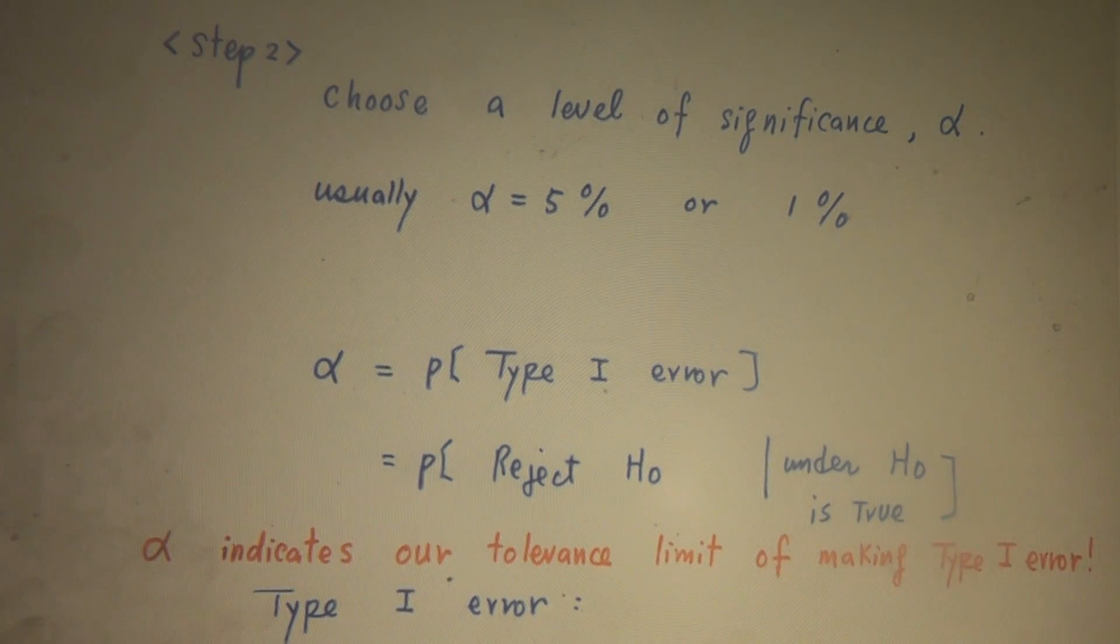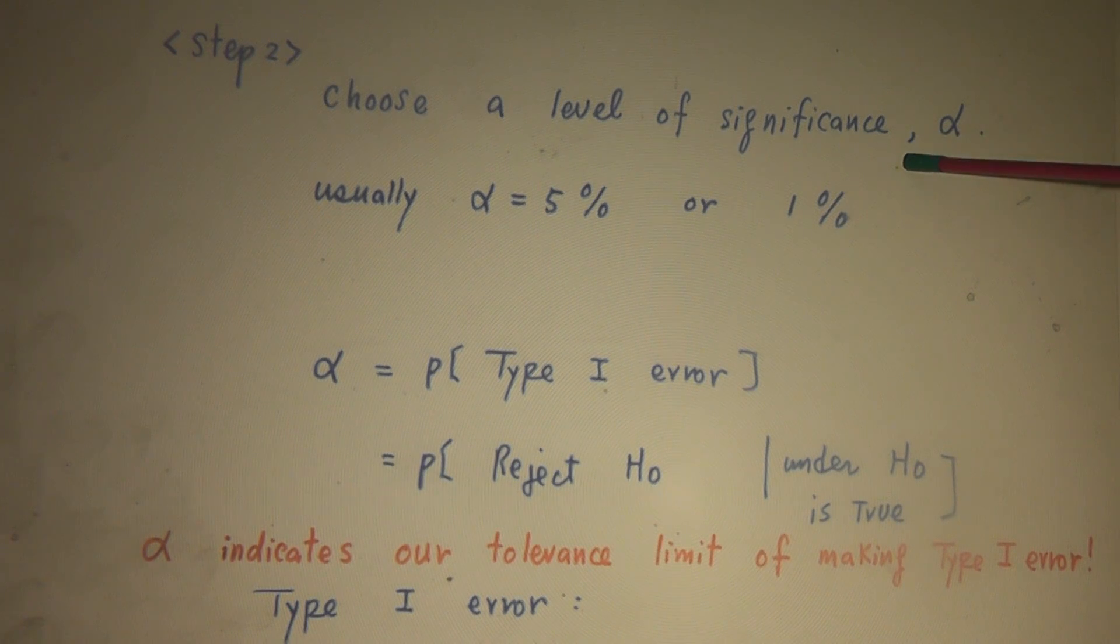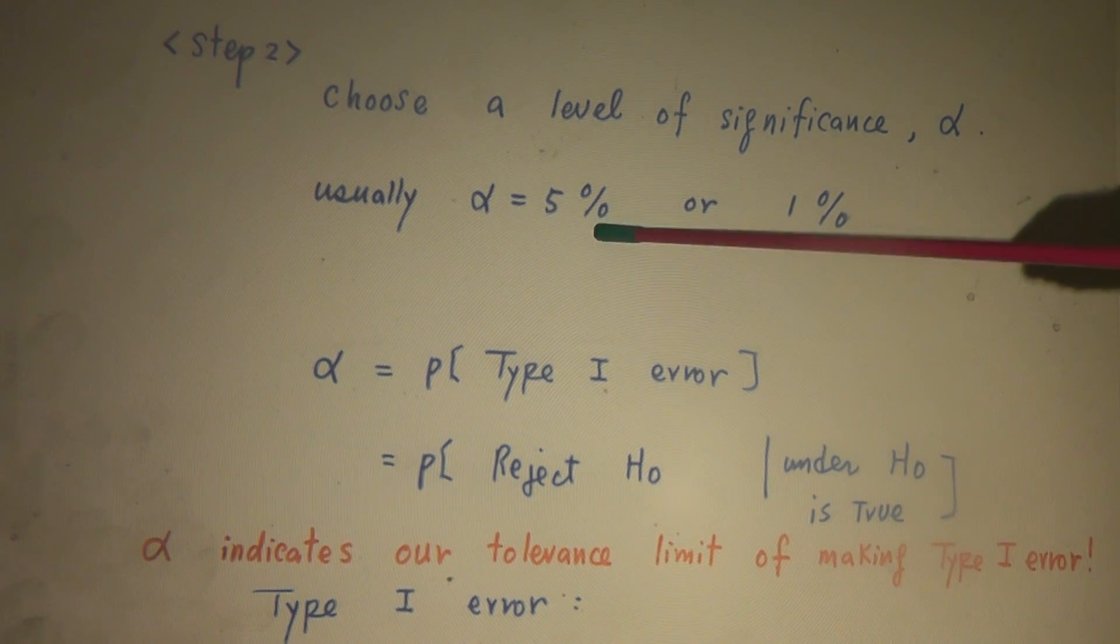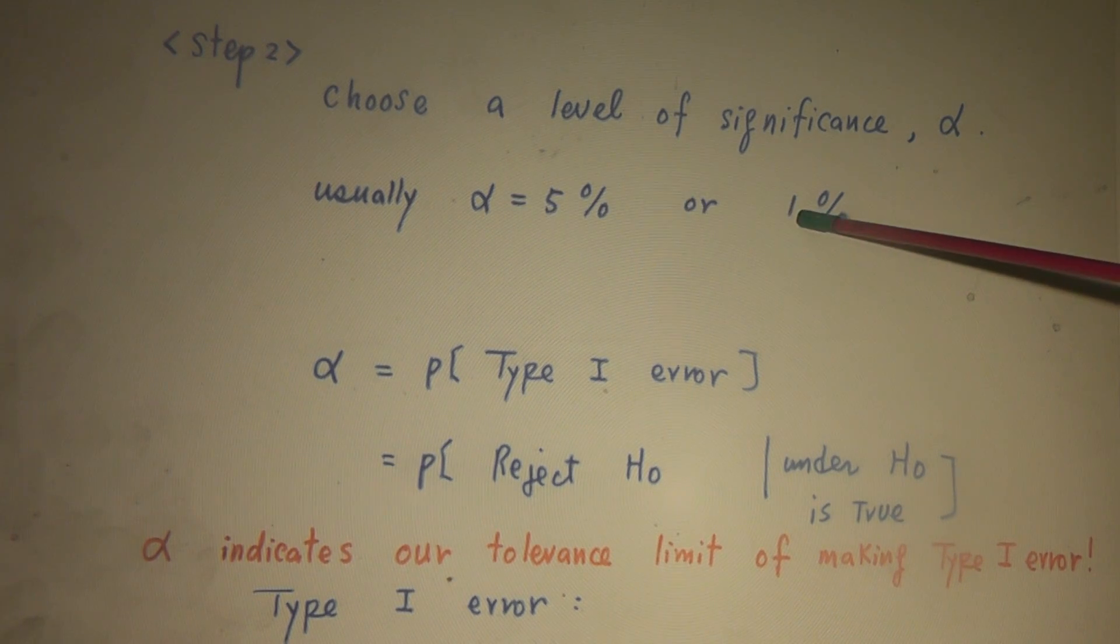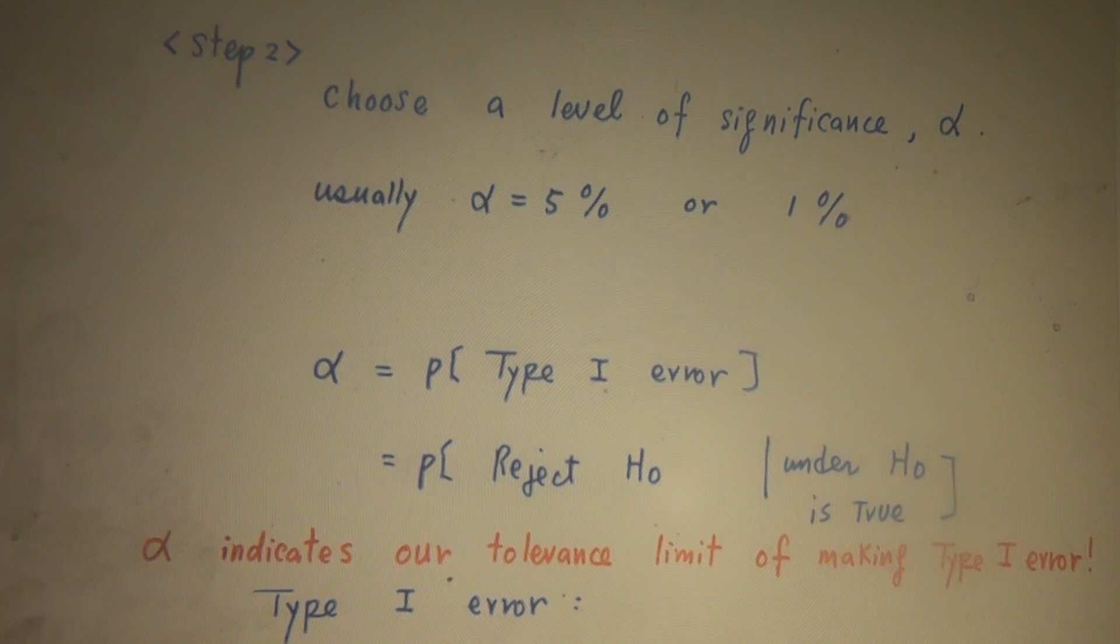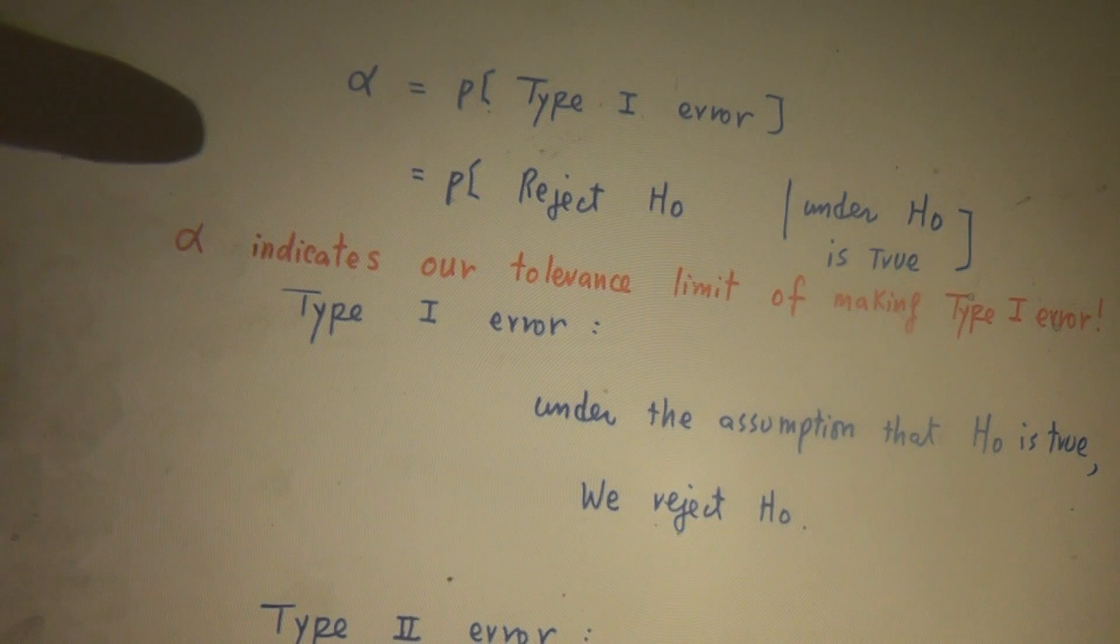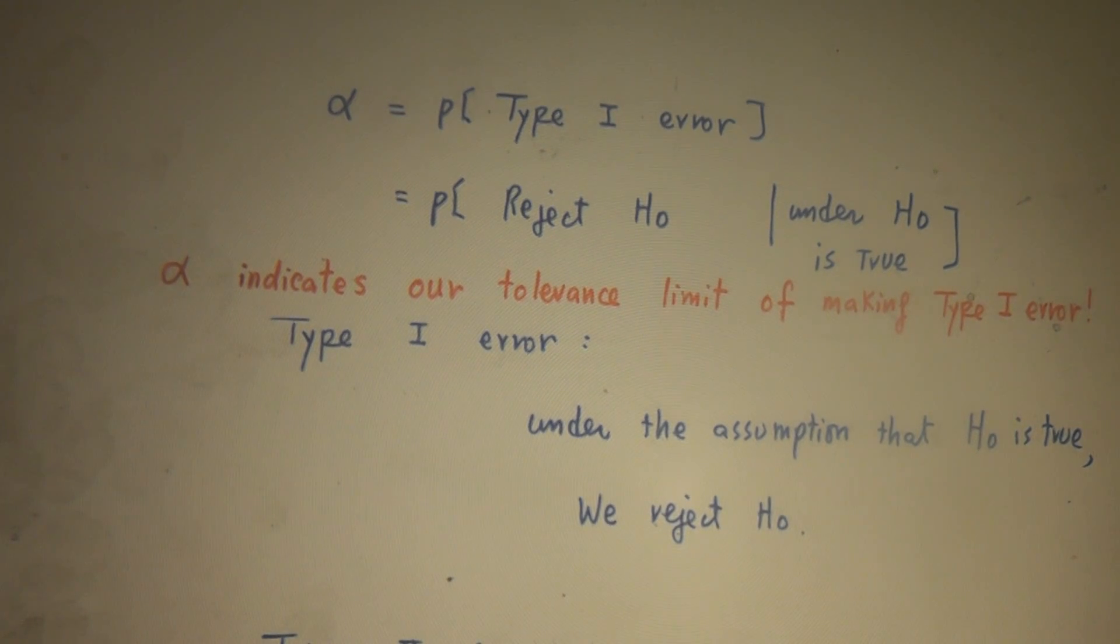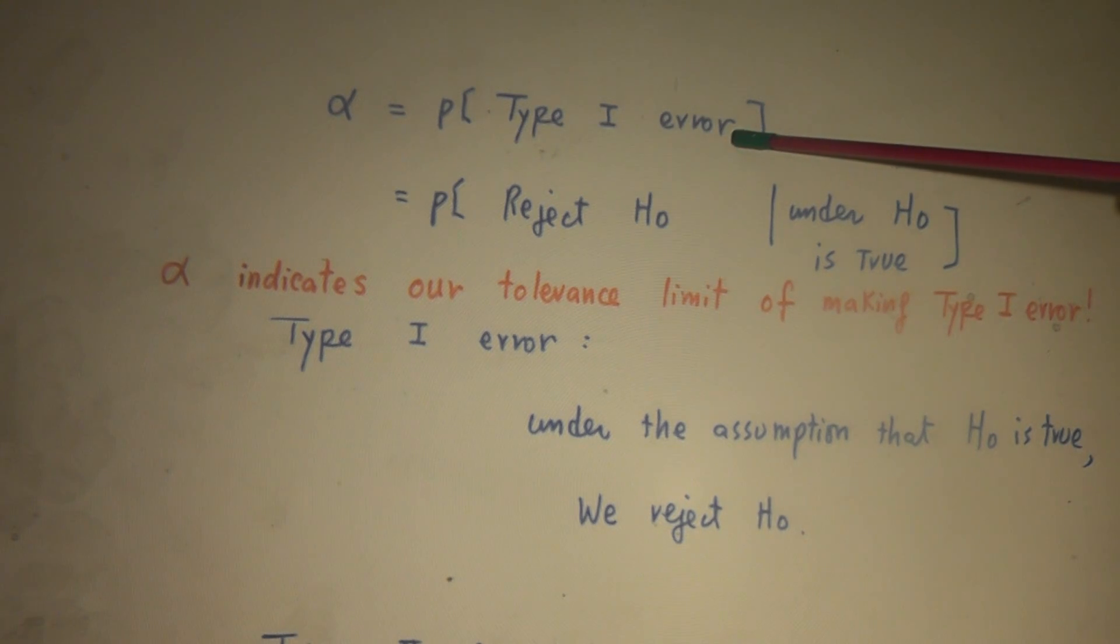Step two. Step two. Choose a level of significance. A level of significance, we use notation alpha. Usually people pick up alpha equal to 5% or 1%. Why people pick a smaller number, 5% or 1%? There is a reason behind it. Let me try to explain how we define alpha. Then you understand.